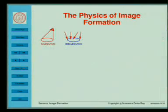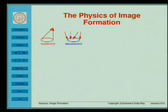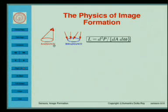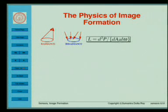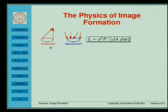First, I will come to the problem of the physics of image formation. There are two terms that most of us are familiar with — we would have studied these in school physics. There are two terms that sound similar: one is radiance, the other is irradiance. Radiance is defined as the differential power divided by a small unit area and a small solid angle — that is, power per unit area over which it is radiated, per unit solid angle into which it is radiated.